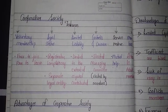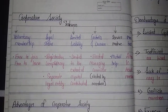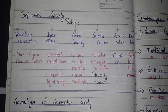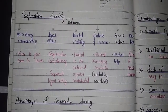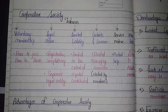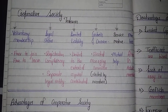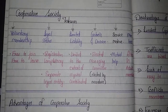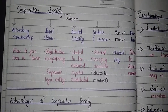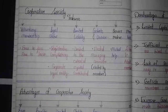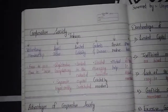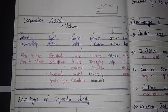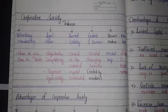Registration of a cooperative society is compulsory. The third feature is limited liability — the liability of members of the cooperative society is limited only to the extent of capital contributed.